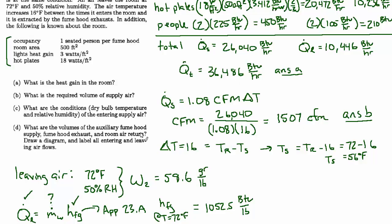And now part D. They want to know what are the volumes of the auxiliary fume hood supply, fume hood exhaust, and the room air return, and draw a diagram and label all the entering and leaving airflow.